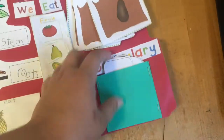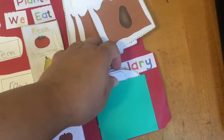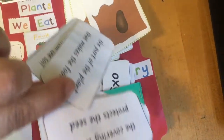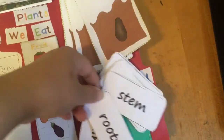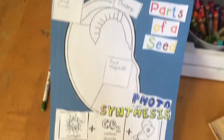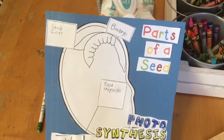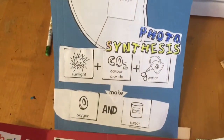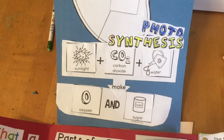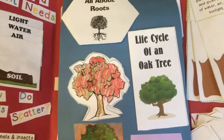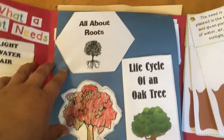There's some vocabulary in here — a couple of these — and then the definitions are in the back. This is parts of a seed, and then photosynthesis. We also started learning about trees as well.